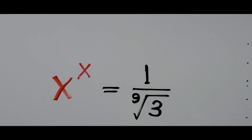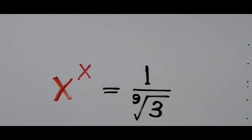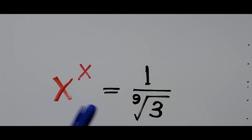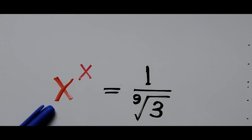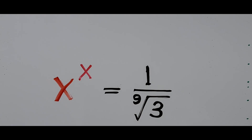Hello everyone, we have an exponential equation on the board: x to the power of x is equal to 1 over the 9th root of 3. We are going to find the value of x.